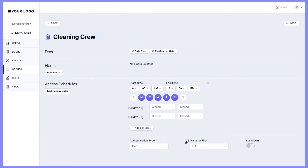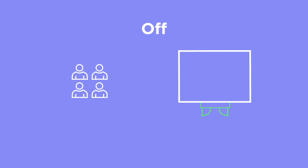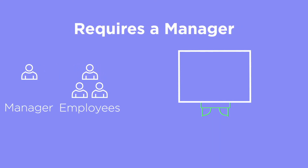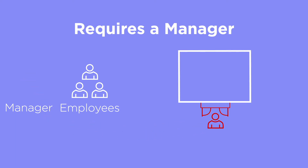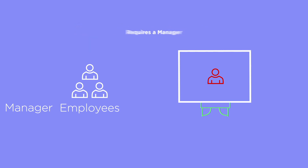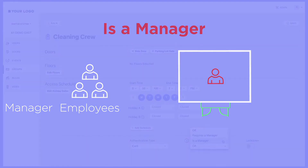The Manager First option is a great feature. If the setting is off, the user can access the door under any circumstances. If the user requires a manager, then they must wait for a manager to access the door. After a manager has accessed the door, the user will be granted access into the building. If the user is a manager, they will have access as soon as they swipe their credential, and anybody who requires a manager can now access the building.